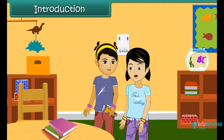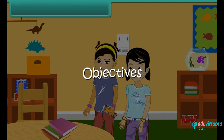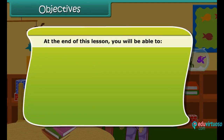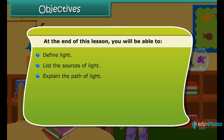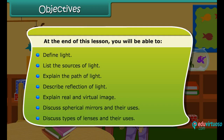Yeah, why not? Come children, let's learn about an energy that is all around us — light. At the end of this lesson, you'll be able to: define light, list the sources of light, explain the path of light, describe reflection of light, explain real and virtual image, discuss spherical mirrors and their uses, and discuss types of lenses and their uses.